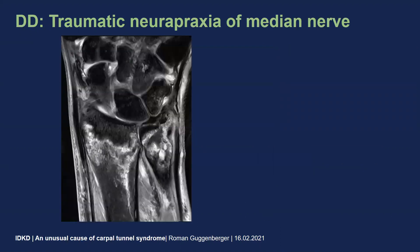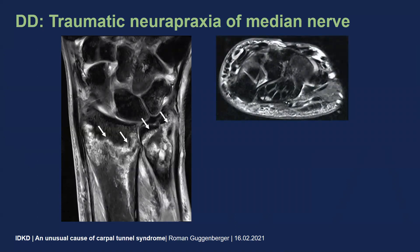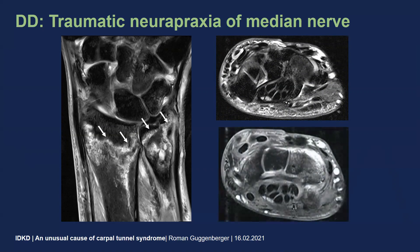Thinking about carpal tunnel syndrome, there are primary and secondary causes, and among the secondary causes, traumatic reasons would be encountered quite frequently. This is a different patient who had experienced a fracture to his distal forearm, and on MR neurography we would find edematous changes of a bifid median nerve underneath the flexor retinoculum.